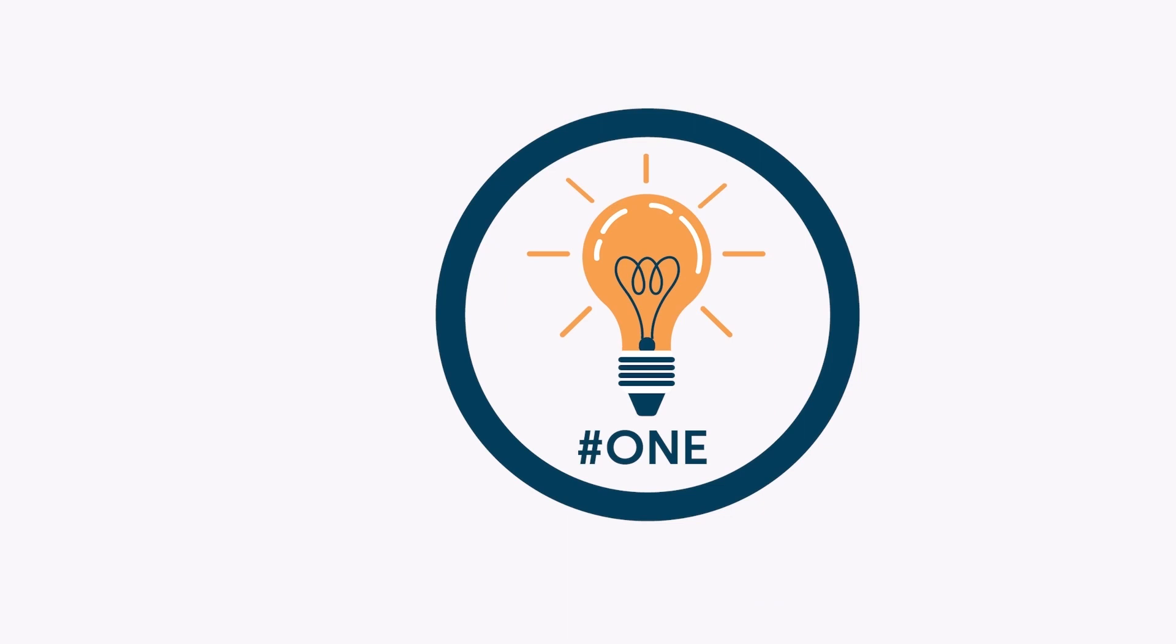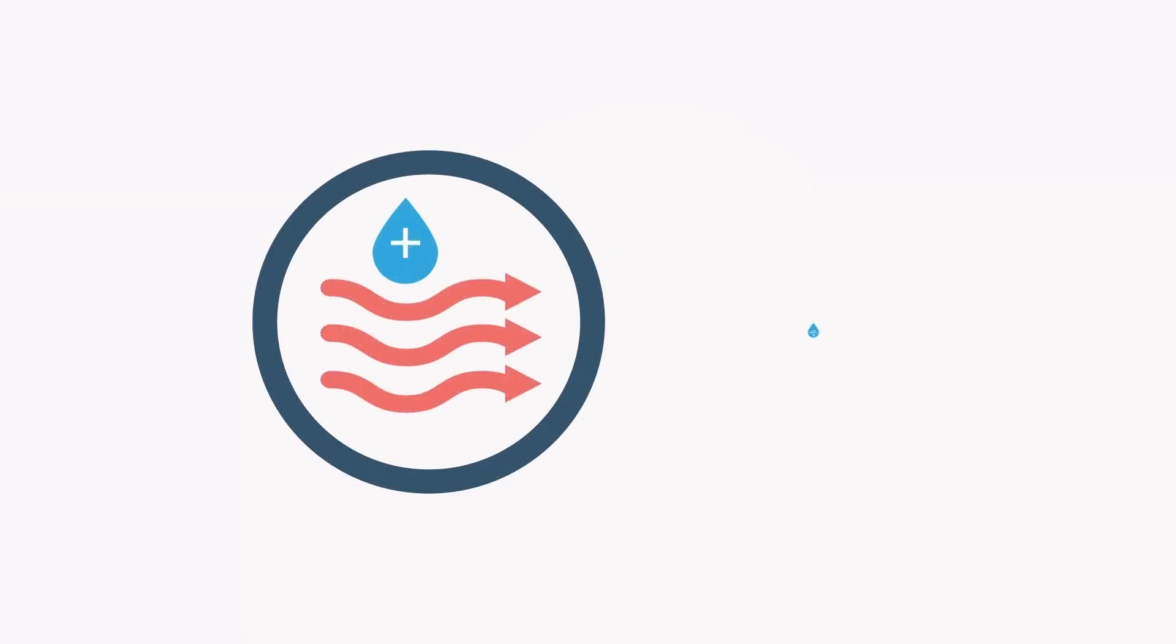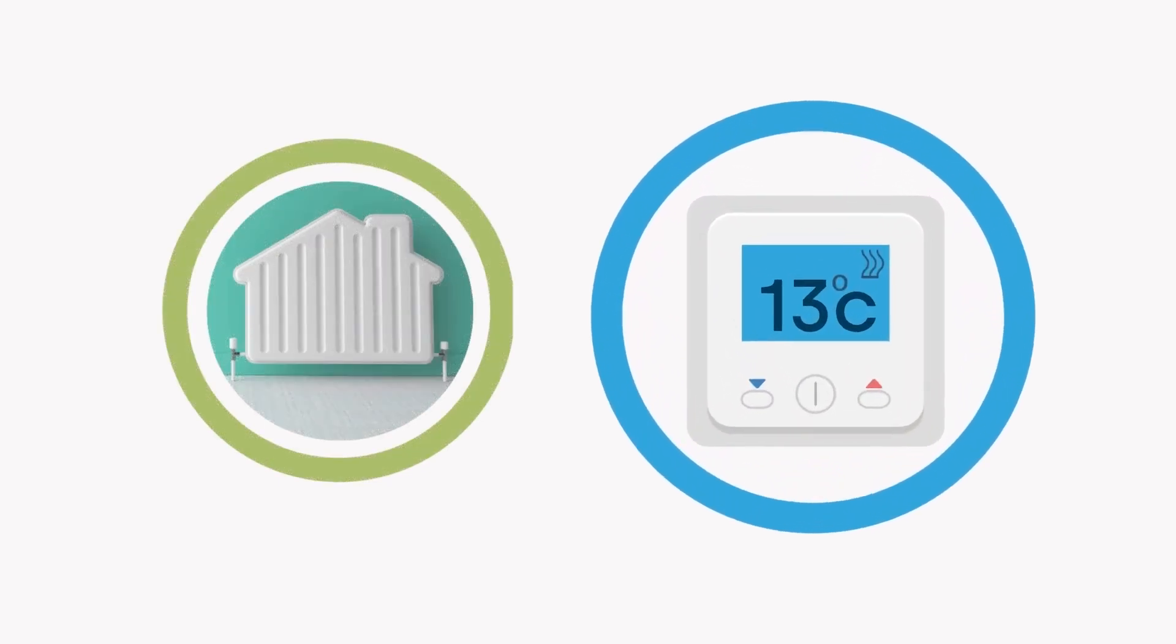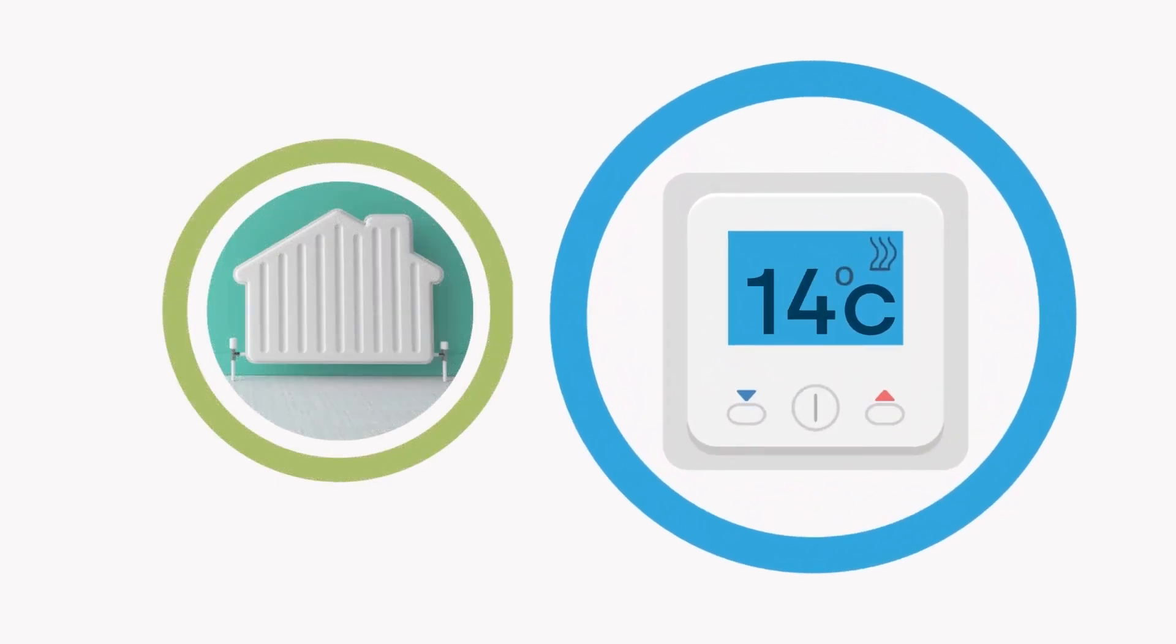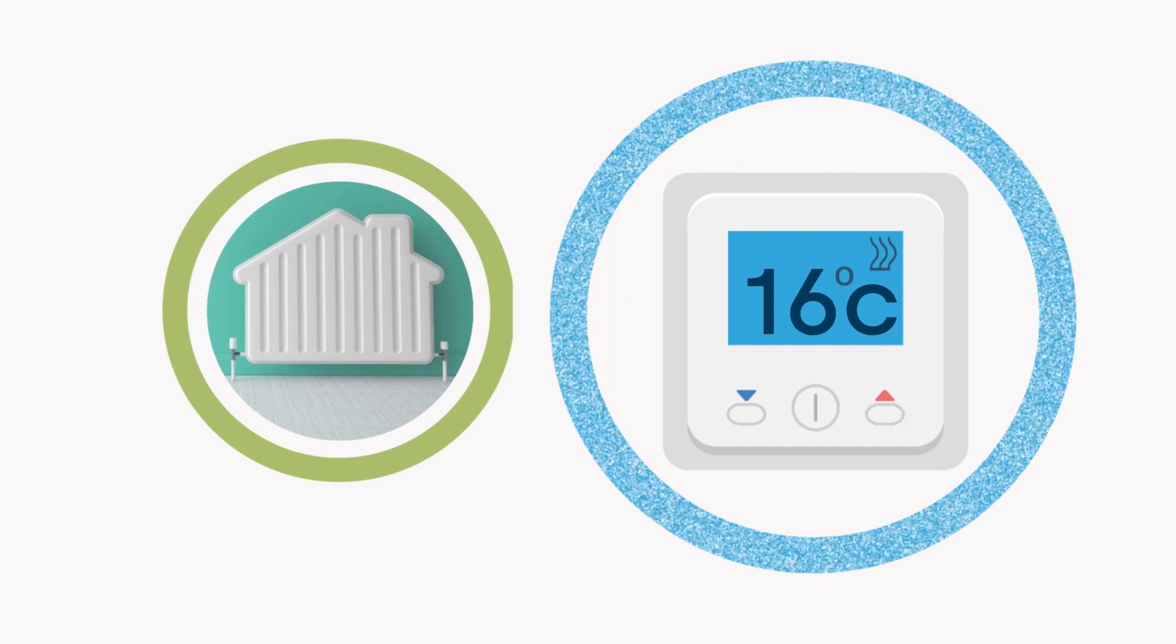Tip number one. Did you know that warm air can hold more moisture and cause less condensation? If your home has condensation on surfaces like walls and windows, it is important to make sure your home is heated properly. If you can, turn the thermostat to a steady 16 degrees Celsius.